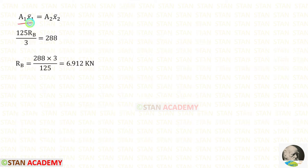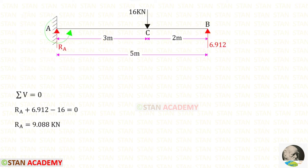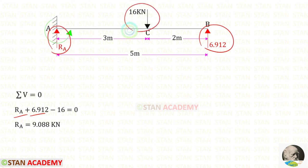Since Area1 × x̄1 = Area2 × x̄2, we equate them: 125Rb/6 = 288. Solving, we get Rb = 6.912 kN. Now applying ΣV = 0: Ra and Rb act upwards (positive) and the 16 kN load acts downwards (negative). Solving, we get Ra = 9.088 kN.